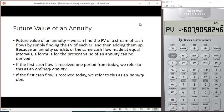You can use these formulas or you can use the financial calculator to do this. Let's take a look at the future value of an annuity. We can find the future value of a stream of cash flows by simply finding the future value of each cash flow and then adding them up. But because the annuity consists of the same cash flow, it's easy to derive a formula. If the first cash flow is received one period from today, we refer to this as an ordinary annuity. If the first cash flow is received today, we refer to this as an annuity due.